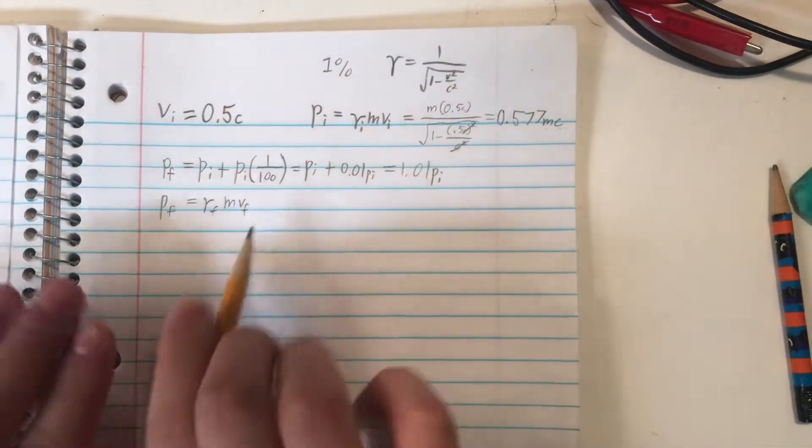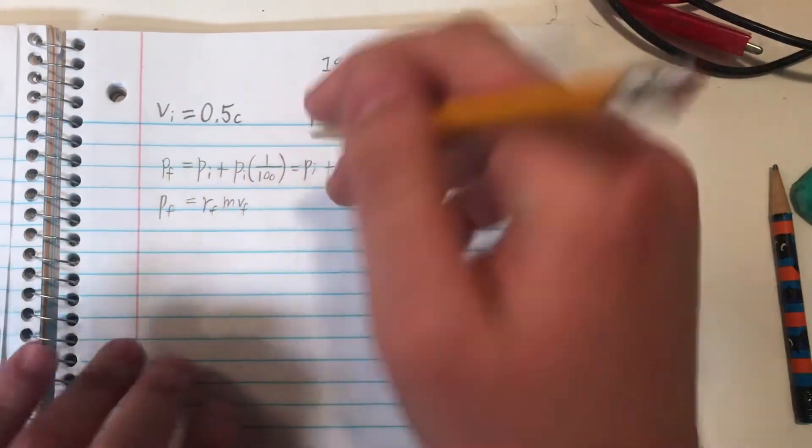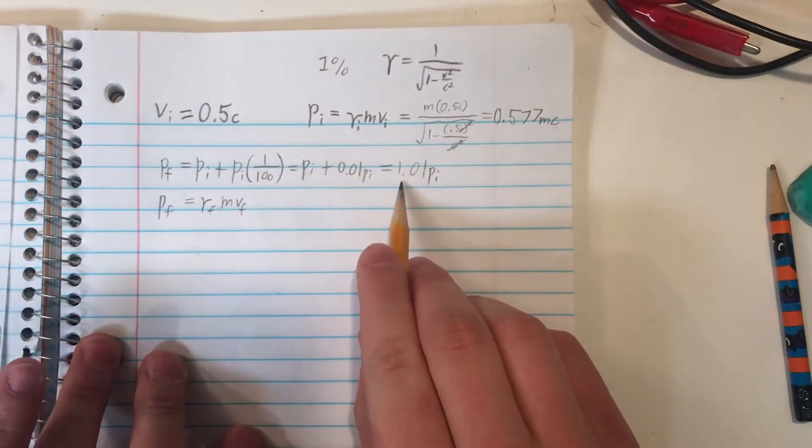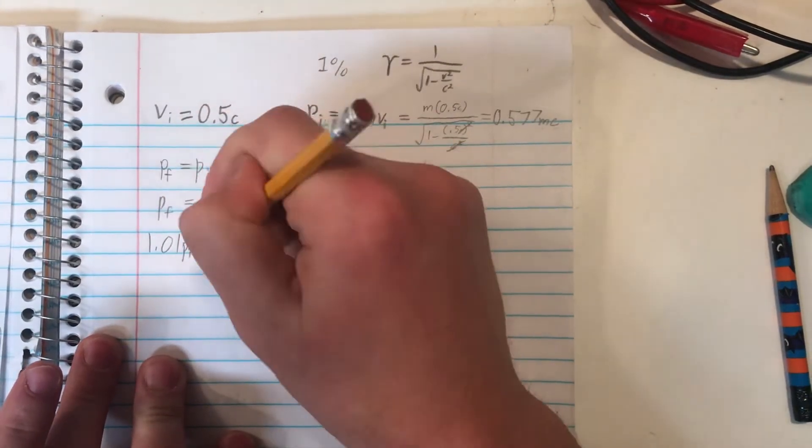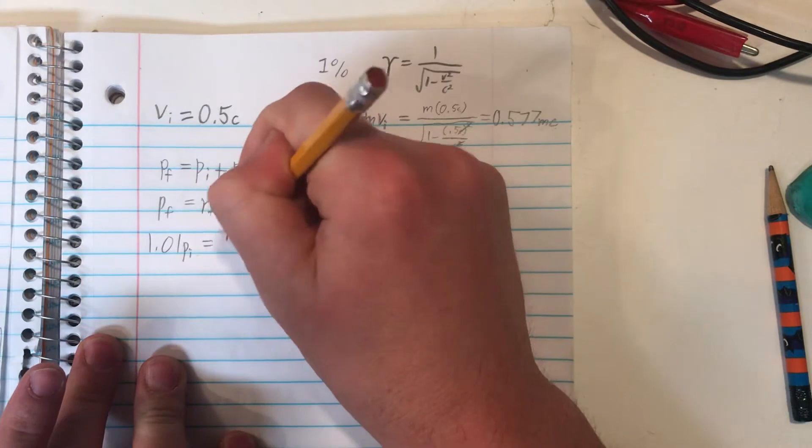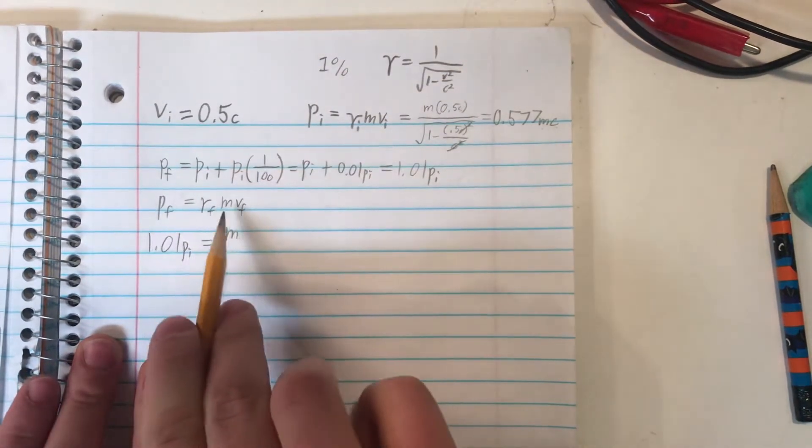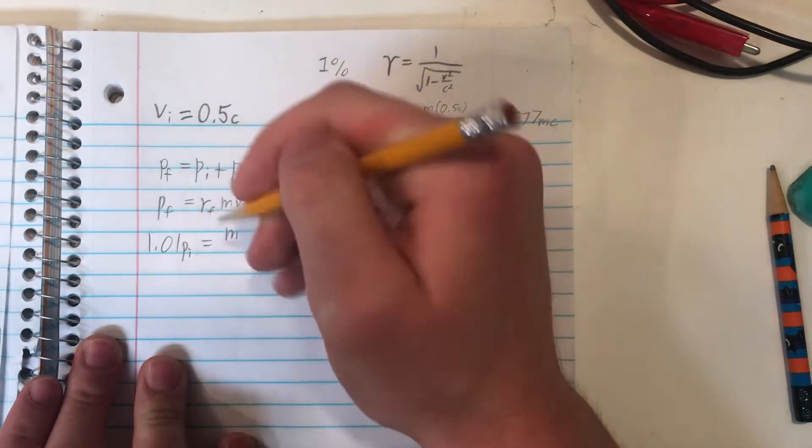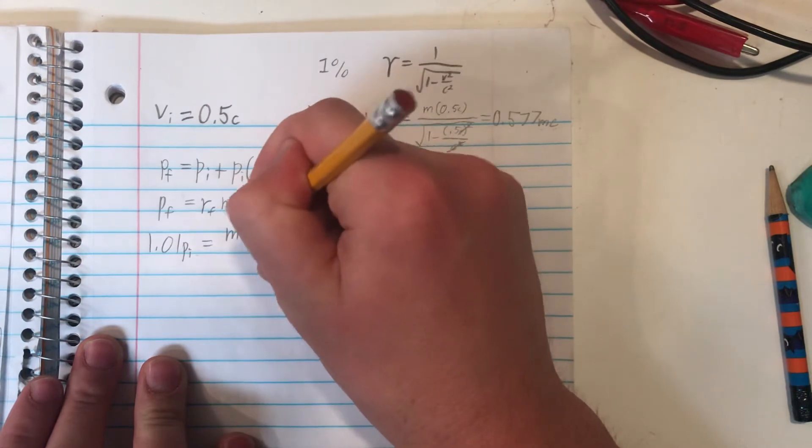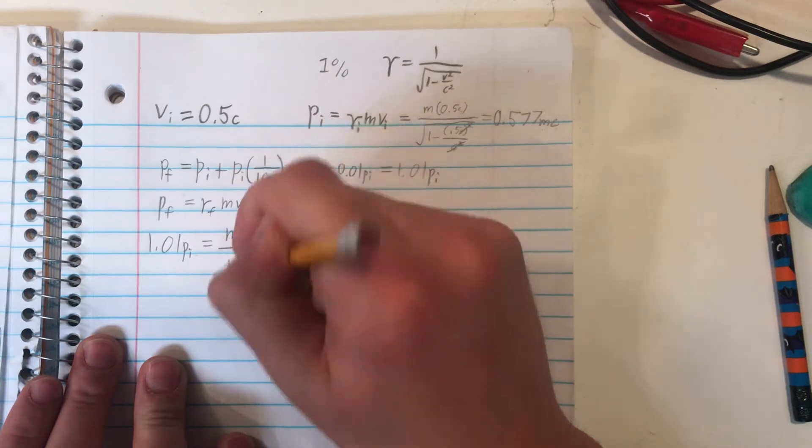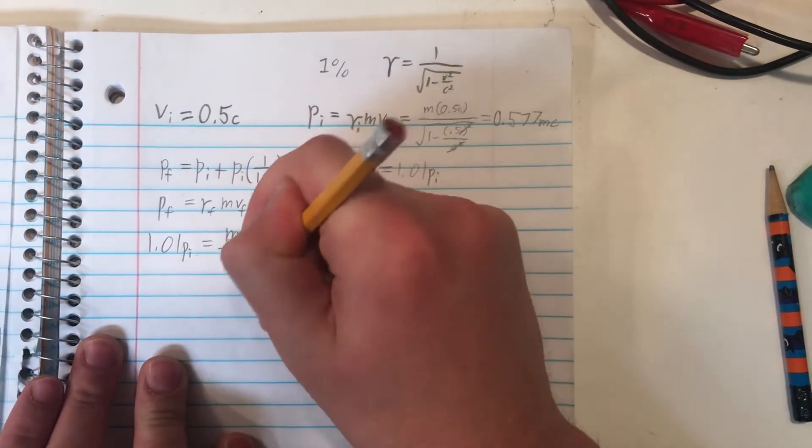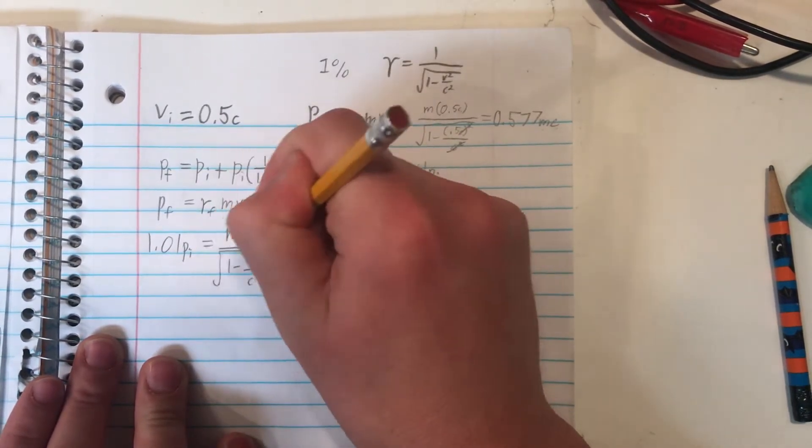So if we rewrite this out in the same way, we can learn that the final momentum we're trying to find, or 1.01 p sub i, is equal to the Lorentz form, the relativistic form of momentum. So m times v sub f divided by the square root of 1 minus v final squared over c squared, and it's all in the square root.